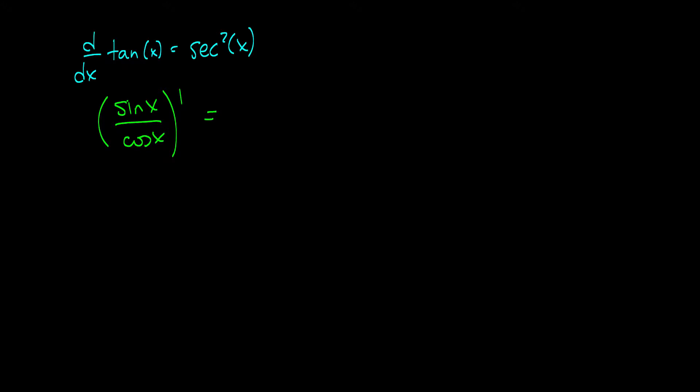So this is f prime of x, so cos x times cos x minus f of x, which is sine of x, times the derivative of cos of x, which is negative sine x. So this will be cos x cos x plus sine x sine x all over the bottom squared. So this is cos squared x, which is the same thing as cos squared x plus sine squared x over cos squared x, which is the same thing as 1 over cos x squared by our identity that cos squared x plus sine squared x is equal to 1. And we know that 1 over cosine squared x is the same thing as secant squared x. So here we have just proven that the derivative of tan x is secant squared x.